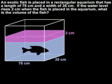An exotic fish is placed in a rectangular aquarium that has a length of 75 centimeters and a width of 35 centimeters. If the water level rises 2 centimeters when the fish is placed in the aquarium, what is the volume of the fish?